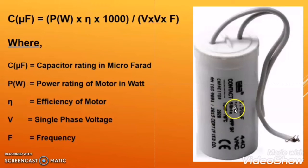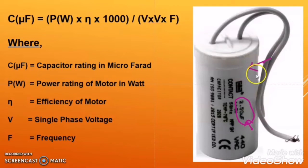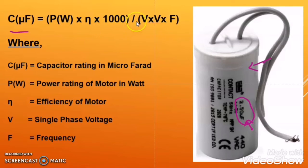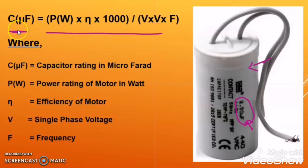You have always seen that on an induction motor there is one rating mentioned — like here it is mentioned as 2.50 microfarad. The formula to calculate the capacitor rating in microfarad is: C (in microfarad) = P (in watts) × efficiency × 1000 ÷ (voltage² × frequency).